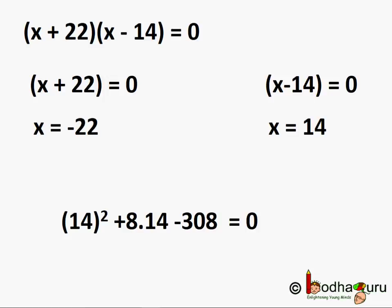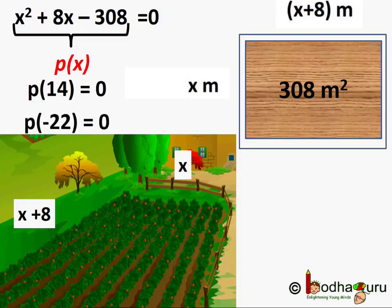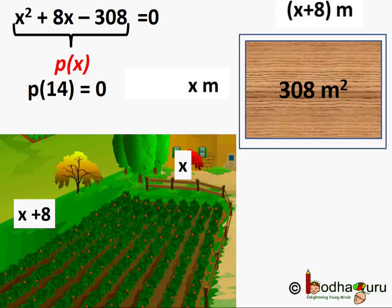If we put these values in the equation, both sides will be 0 — the left-hand side will become equal to the right-hand side. So this equation has two solutions. But since length cannot be negative, x = 14 must be the width of the land, and the length will be x + 8 = 14 + 8 = 22.